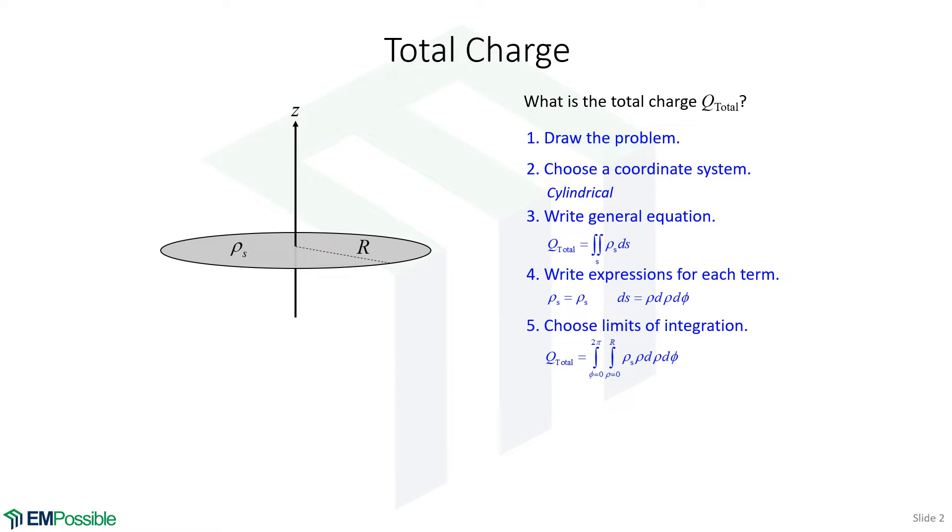Now we have to choose the limits of integration. We're integrating over phi, the angle around the z axis, and we want to go all the way around to include the whole circle, so we'll go from zero to two pi. For rho, we're going to go zero to r. We don't want to go from negative r to big r, because then when we take phi all the way zero to two pi, we would actually have included that circle twice.